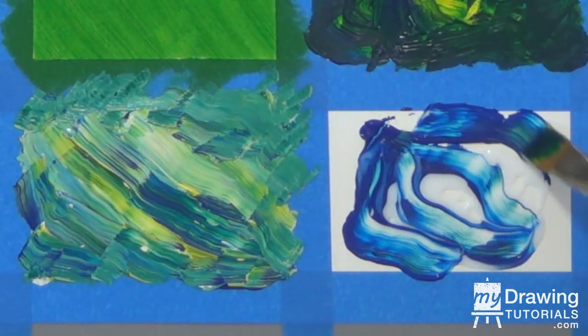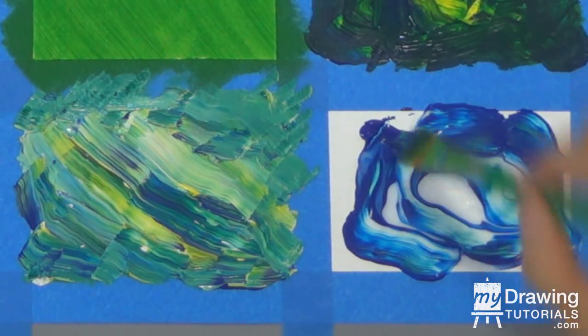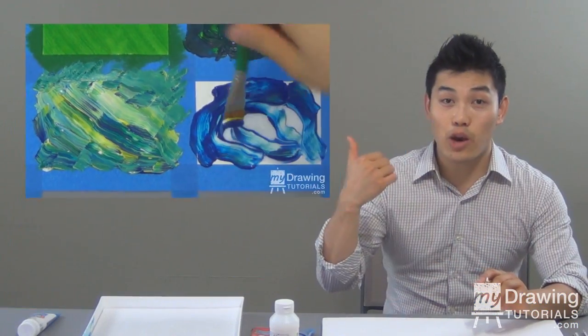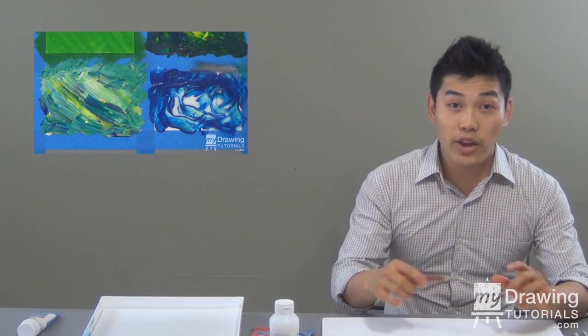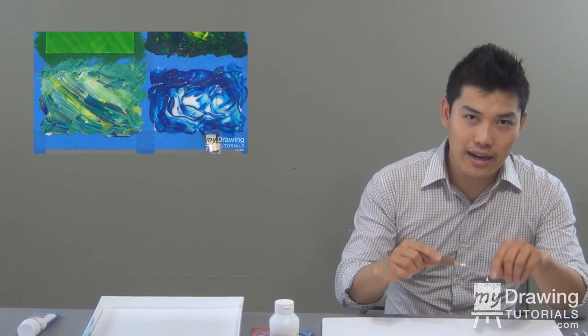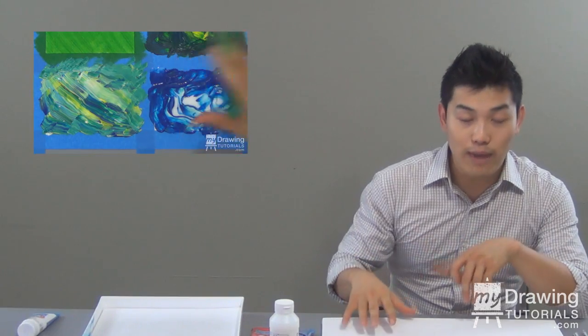So in the last video, we went over how to use a simple color mixing technique that creates really cool effects on the canvas. And if you haven't watched it already, you can watch it by clicking on that image right there. And in this video, I'm going to show you how to use that very same technique to create a cool abstract painting.